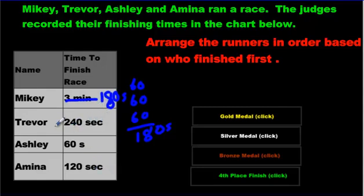Who finished first? It's got to be the smallest number — the guy who finished fastest did it in less time. The guy who takes the longest has a large time because the clock keeps going. So who's got the smallest time? Ashley — she did it in only 60 seconds. That's less than all the others, so Ashley finished first.